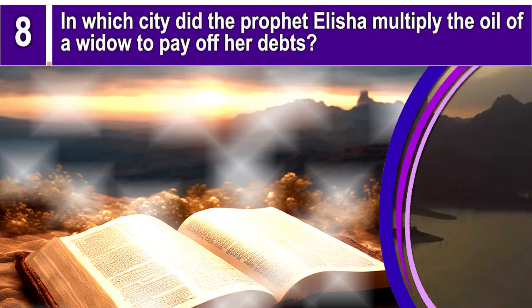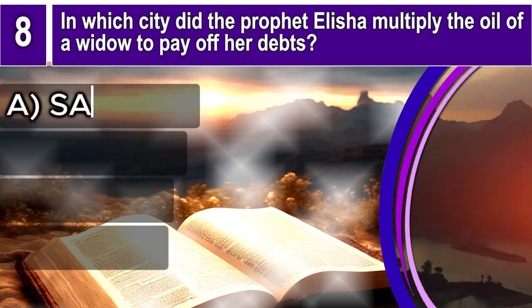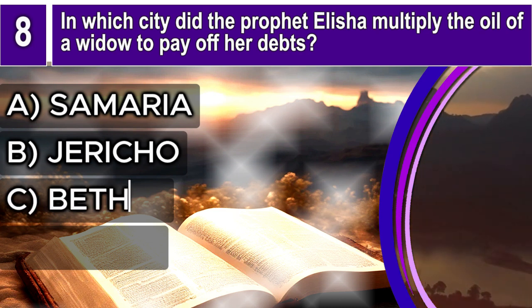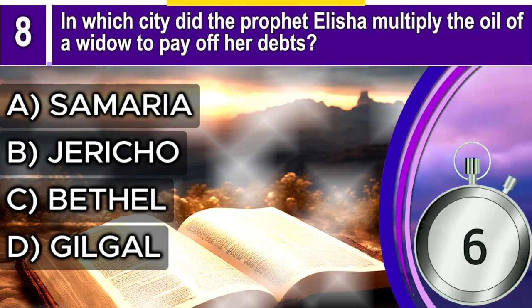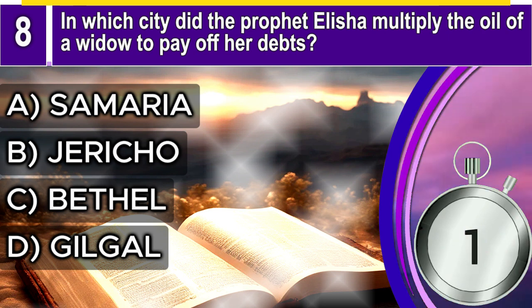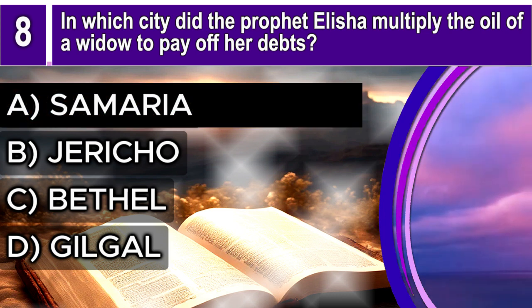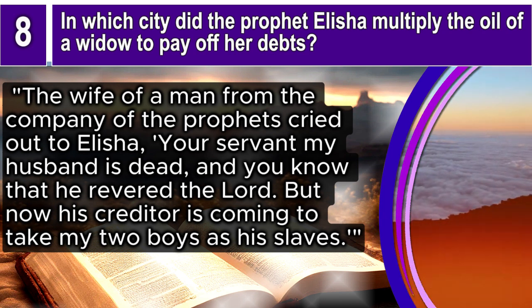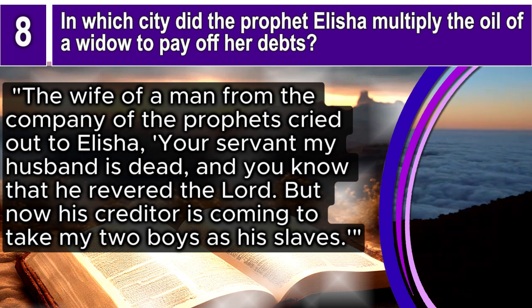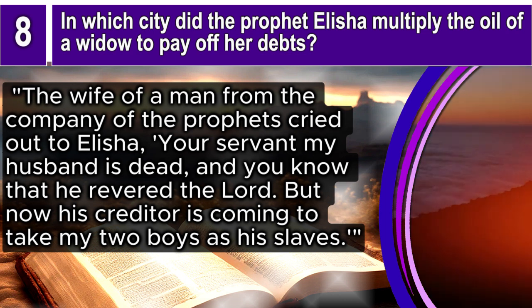Question 8. In which city did the prophet Elisha multiply the oil of a widow to pay off her debts? A. Samaria, B. Jericho, C. Bethel, D. Gilgal. The correct answer is A. Samaria. 2 Kings 4, verses 1–2 says: The wife of a man from the company of the prophets cried out to Elisha, Your servant my husband is dead, and you know that he revered the Lord. But now his creditor is coming to take my two boys as his slaves.